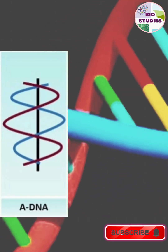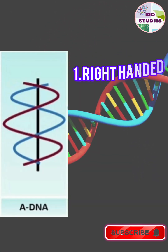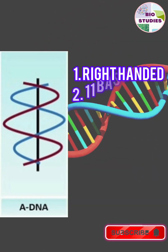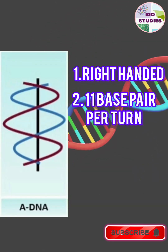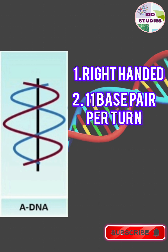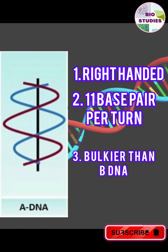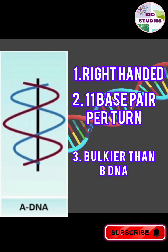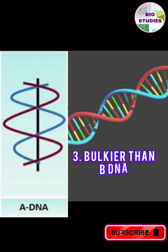First is A-DNA. It is right-handed and there are 11 base pairs present per turn. It is bulkier and heavier than B-DNA.